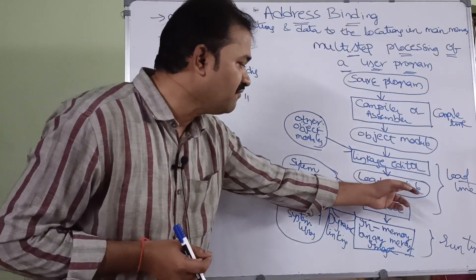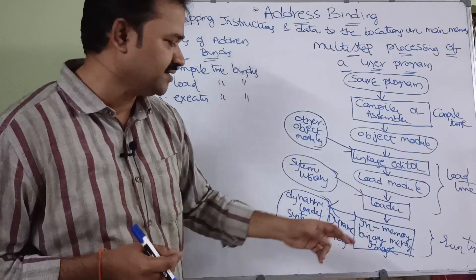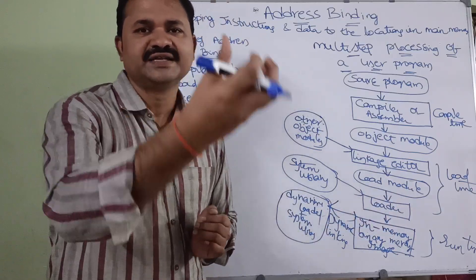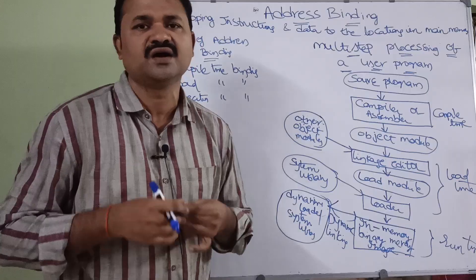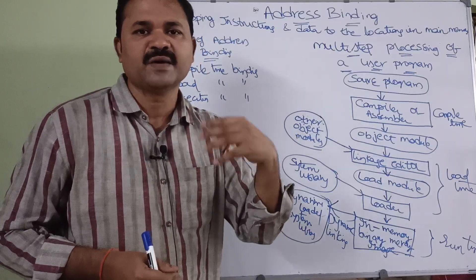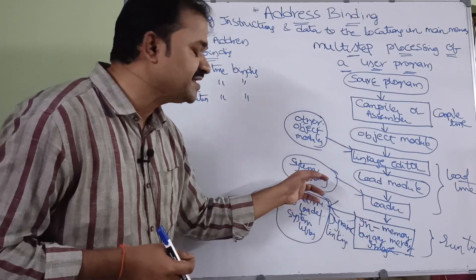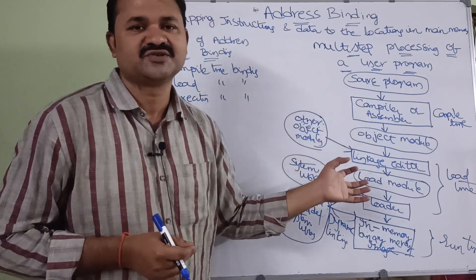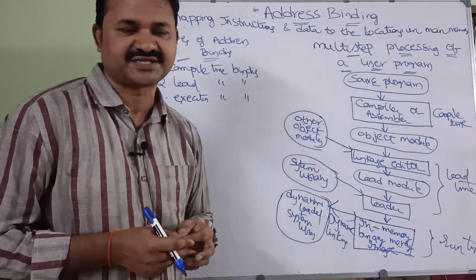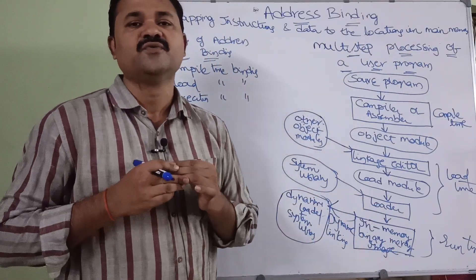Next we have the loader software. The load module is the executable file. The loader loads that executable file into the main memory for execution and allocates memory for the corresponding file. The loader makes use of the system library — all those library functions and files — which are loaded into the main memory for execution.